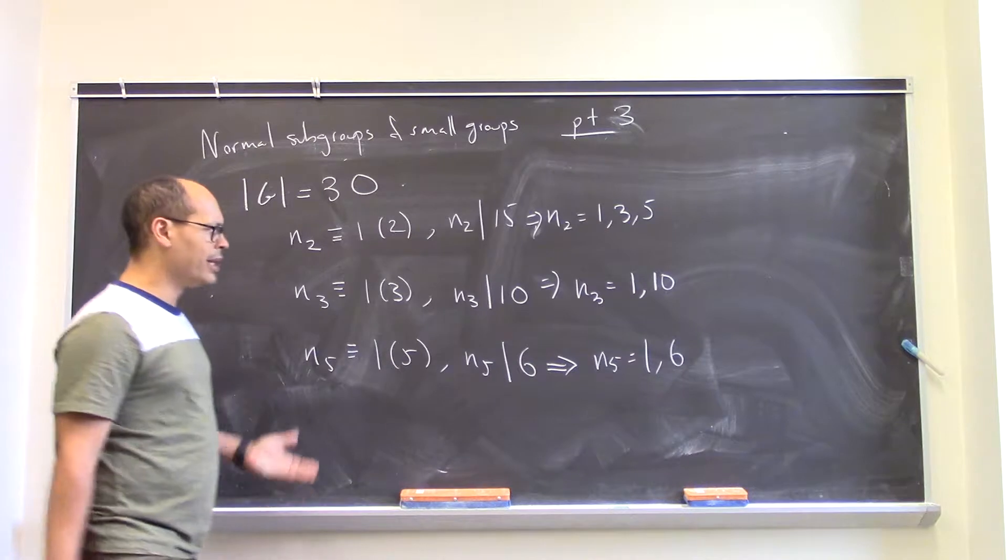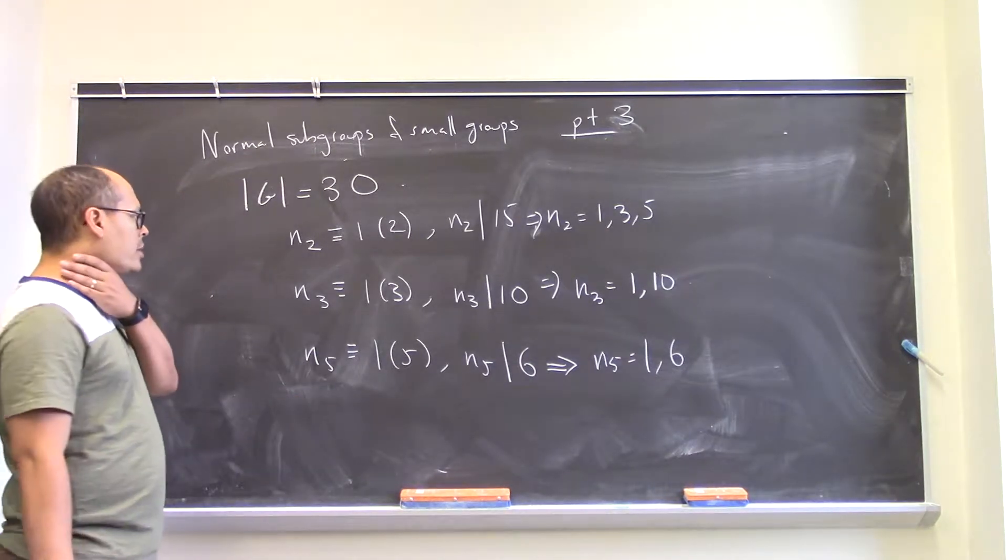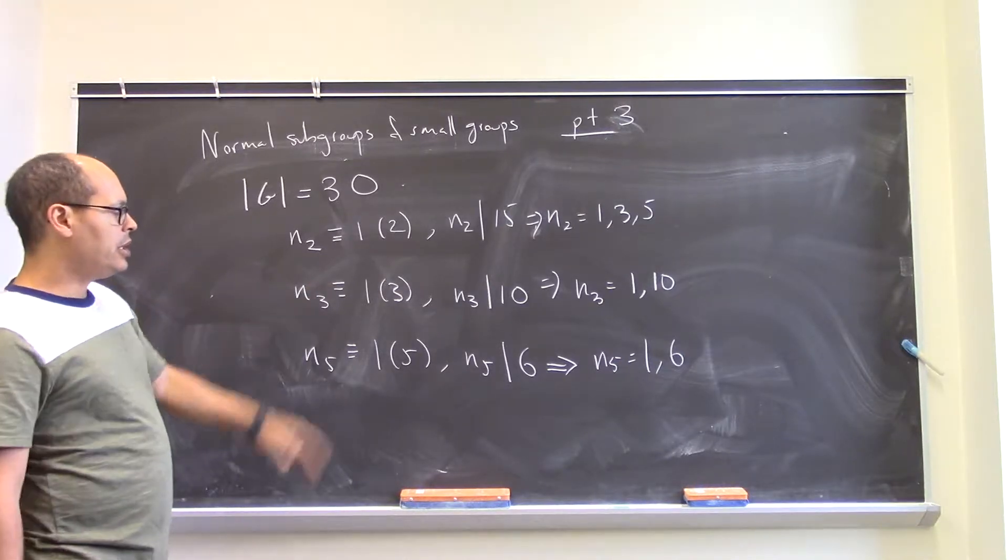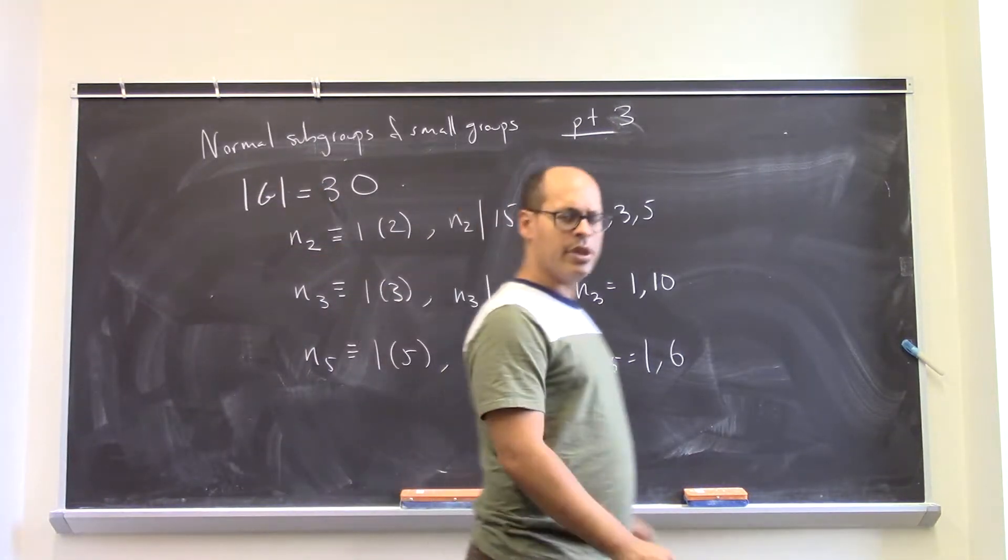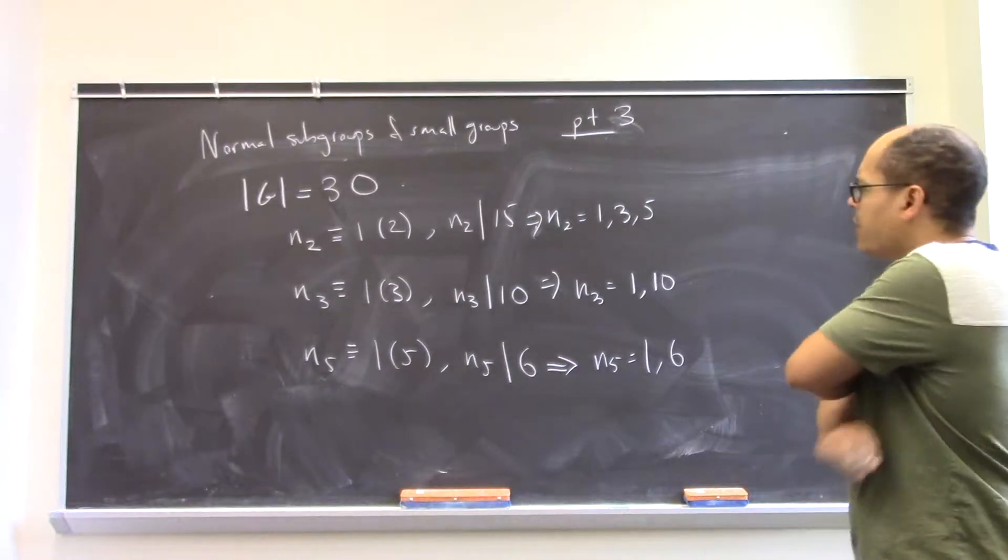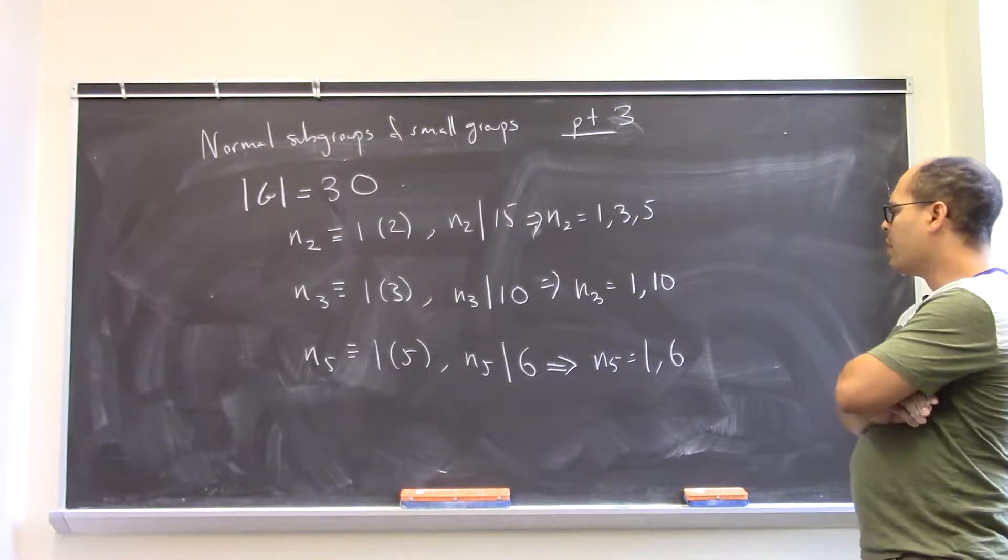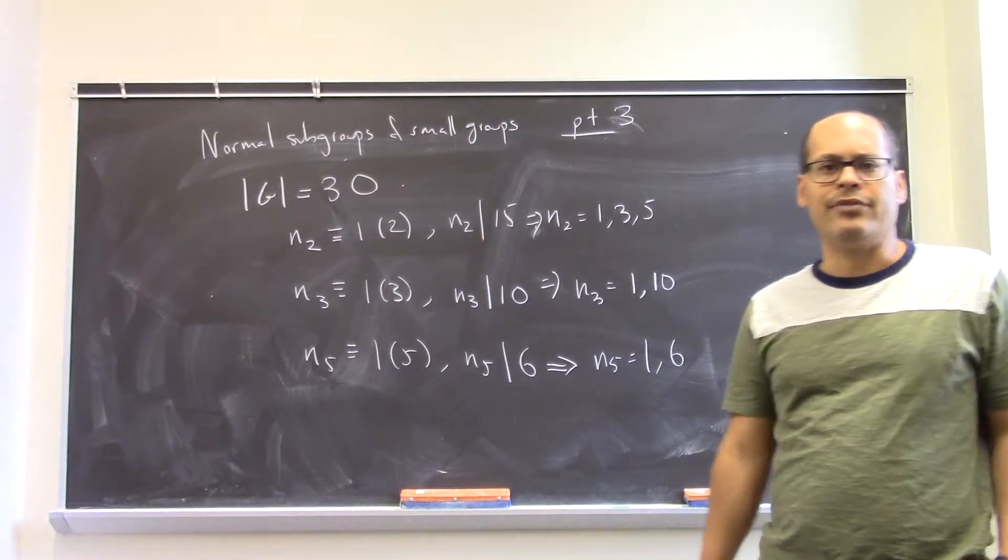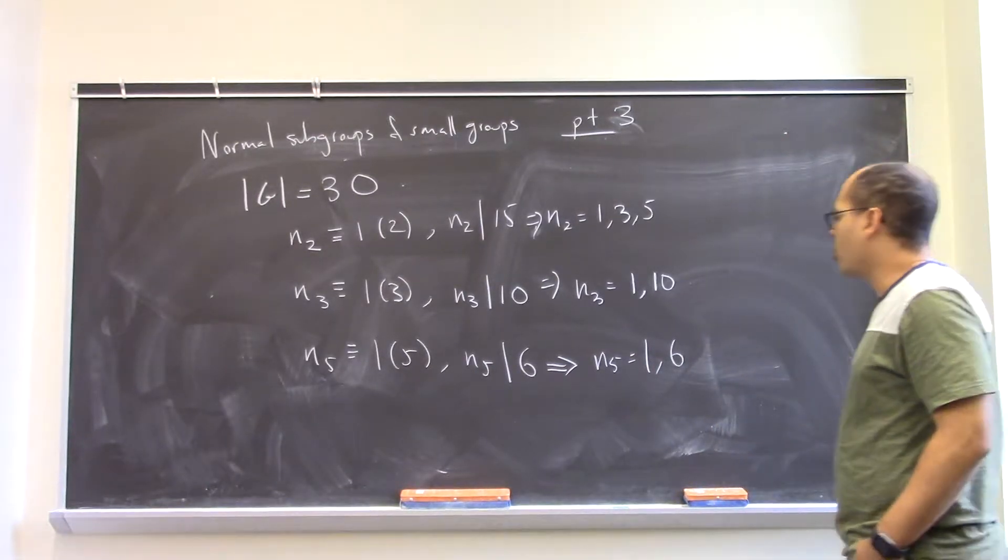And we would like to say still that there should be a normal subgroup. And okay, so how do we do it? Well, if you look at these numbers, you might think like 10 and 6 are really big, right? I mean, that's a lot of subgroups of those orders. And moreover, you know, these are subgroups with 5 elements in them.